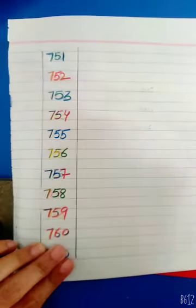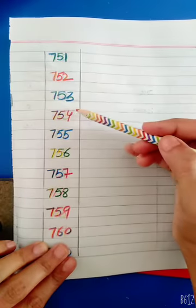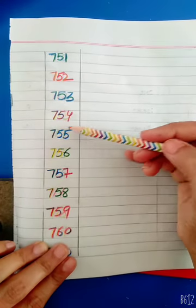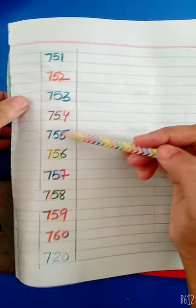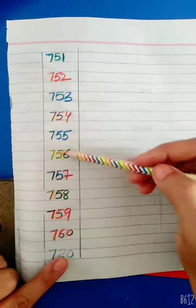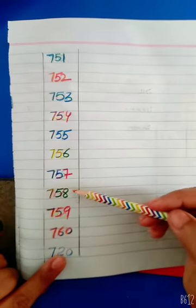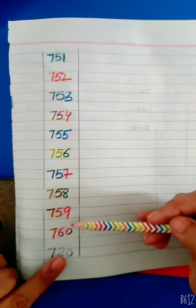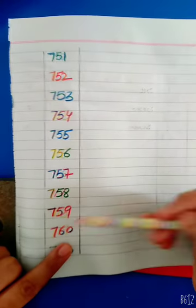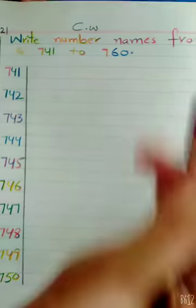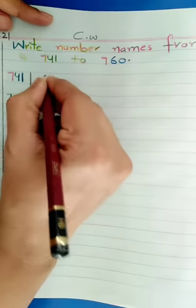751, 752, 753, 754, 755, 756, 757, 758, 759, and 760. Now start writing the number names.